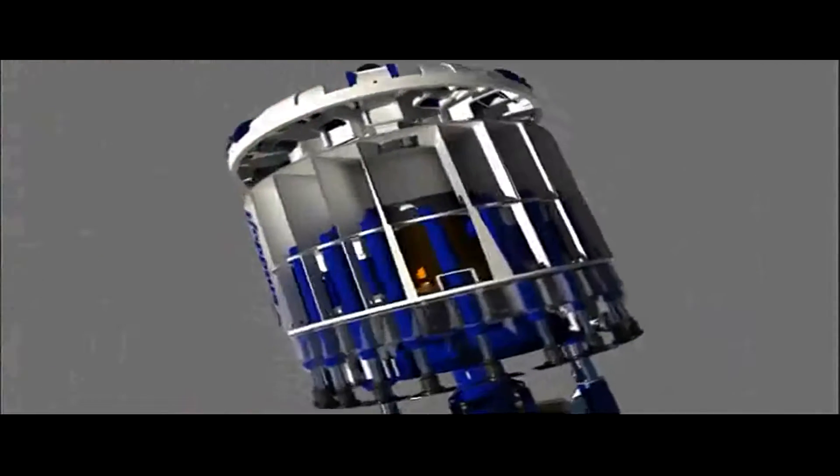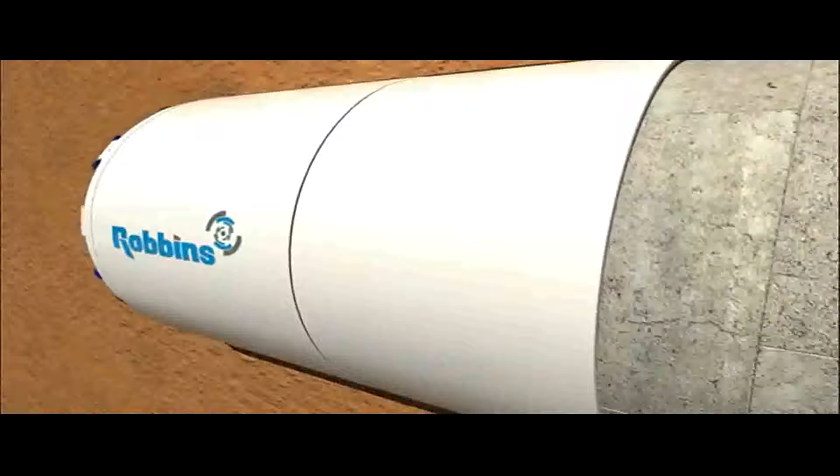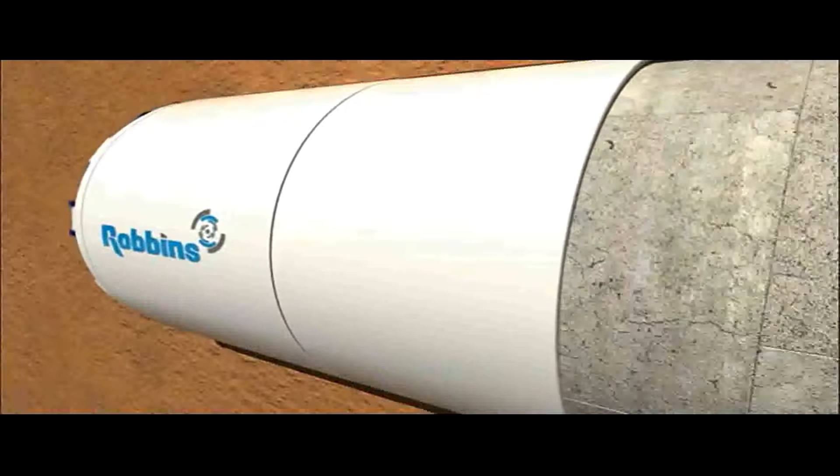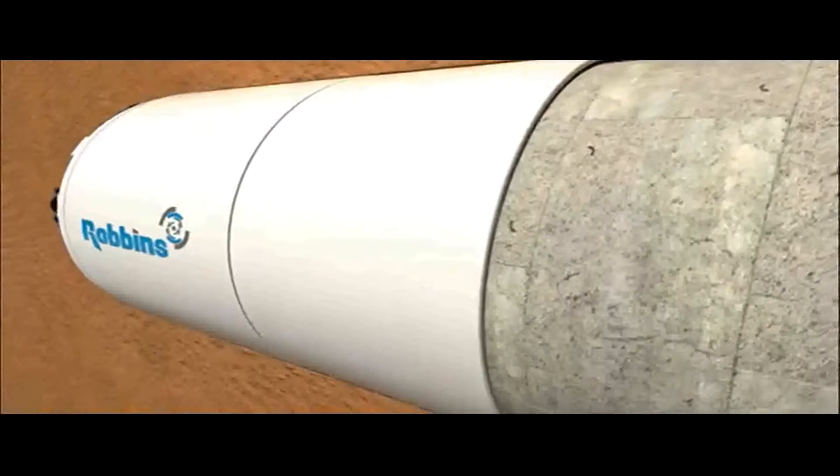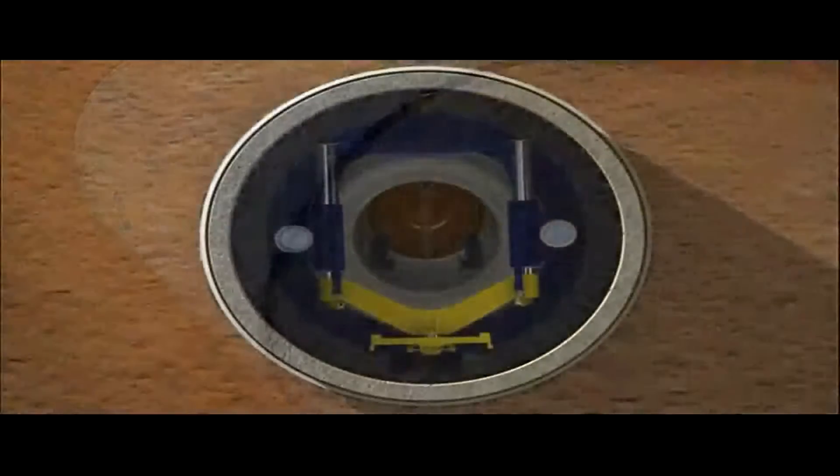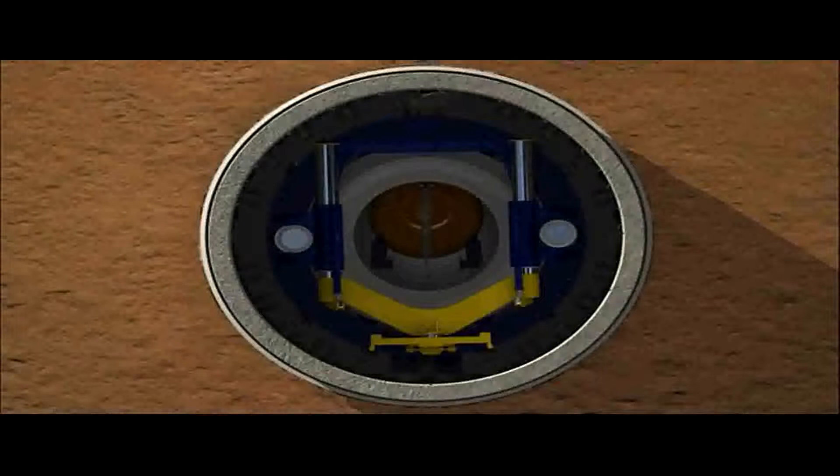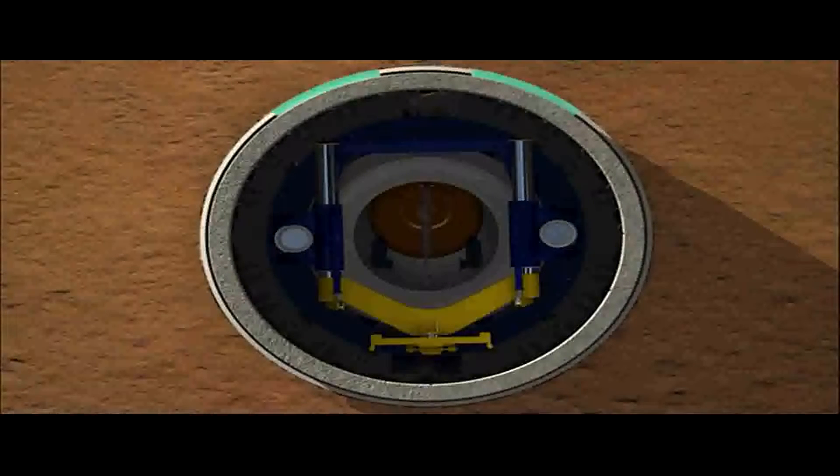Proper support of the tunnel walls as the TBM advances is critical to the safe construction of a tunnel heading. As the machine bores, temporary gaps form naturally between the soft ground and the tunnel lining. The boring process also creates a risk of settlement and upheaval at the surface. To stabilize the soil and fill gaps, the process of backfilling is used.